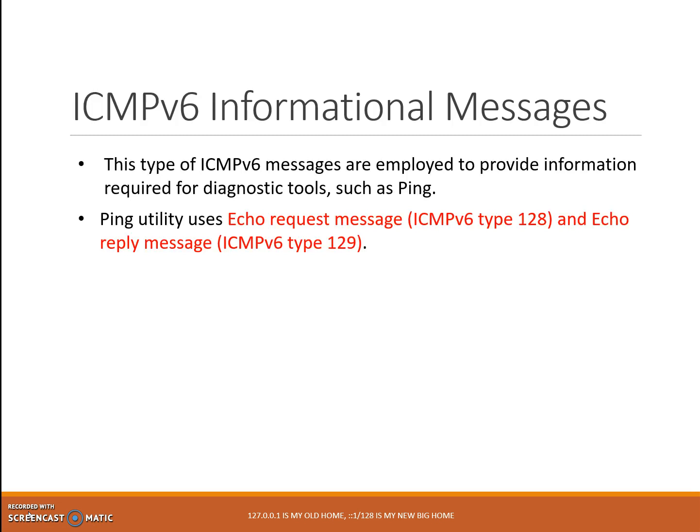Ping utility uses echo request message, ICMPv6 Type 128, and echo reply message, ICMPv6 Type 129. These messages are commonly used to test network layer connectivity between two devices. A device sends an echo request to prompt the destination to return an echo reply to verify network layer (layer 3) connectivity.